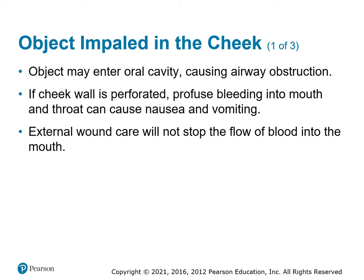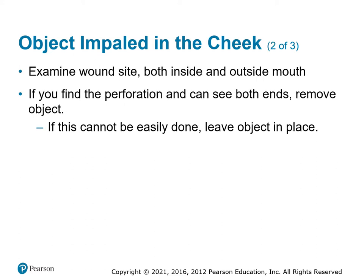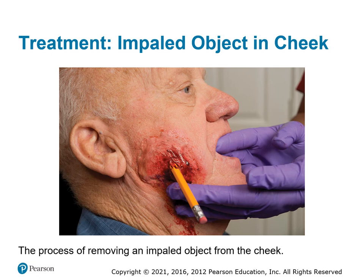If the impaled object is in the oral cavity and is causing airway obstruction, airway comes first — remove it. If it's stuck and not coming out, leave it there and treat the bleeding as best you can, but we need to protect the airway. For example, with a pencil in the cheek: if you pull it out, you're going to have more bleeding. You'll need to assess how far up into the jaw or mouth it is and make a judgment call for your patient's life.